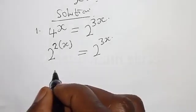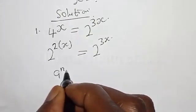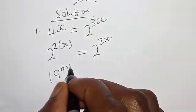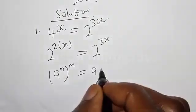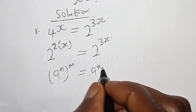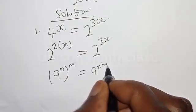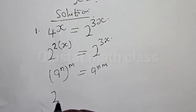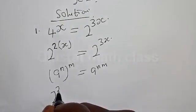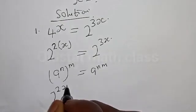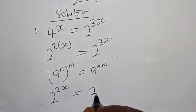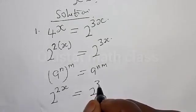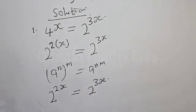Remember, if you have a raised to power n, raised to power m, it is the same thing as a raised to power n times m. Therefore, our equation becomes 2 raised to power 2s is equal to 2 raised to power 3s.